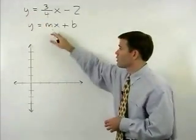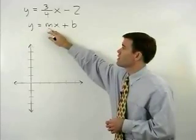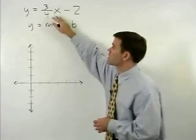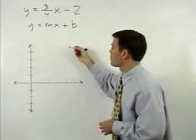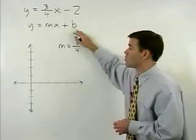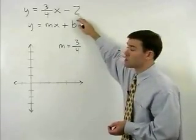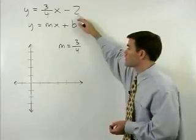Our slope or m therefore is the coefficient of the x term which in this case is three-fourths. Our b or y intercept is the constant term which in this case is negative two.